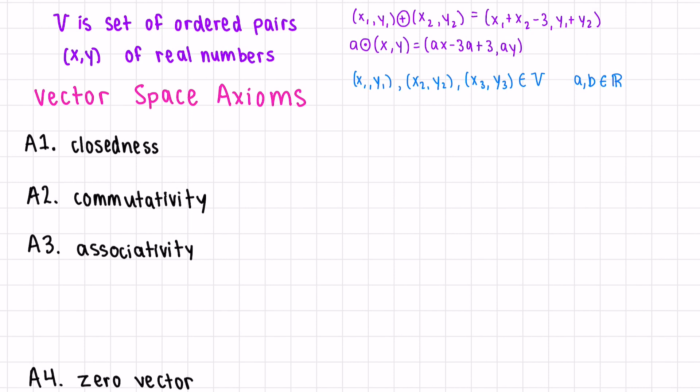Let's prove that V, the set of ordered pairs (x, y) of real numbers, is a vector space. As we can see up here at the top, vector addition and scalar multiplication are both different than they usually are. So to prove it is a vector space, we need to show that all 10 axioms are satisfied.